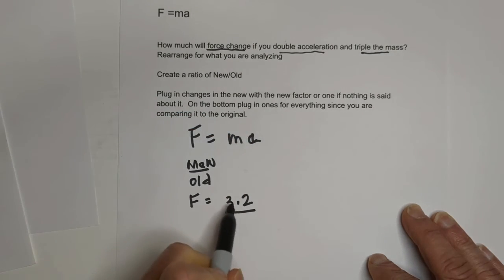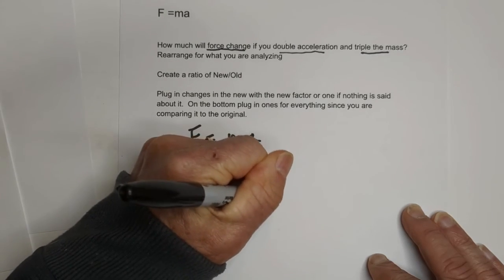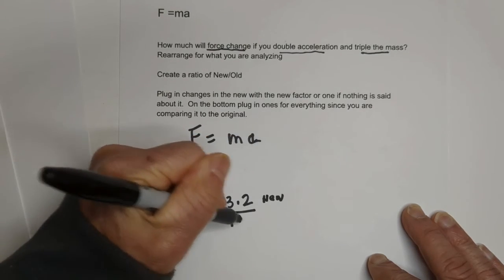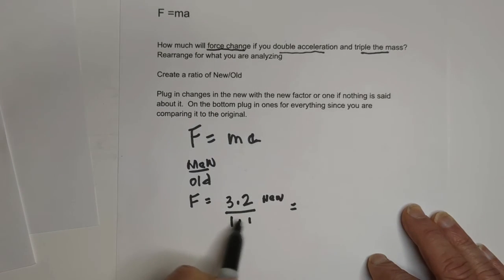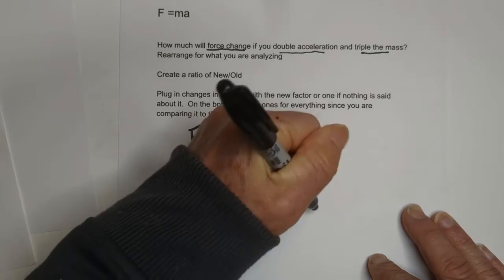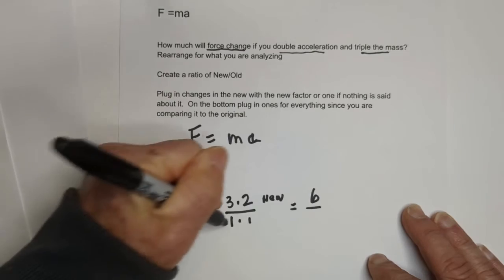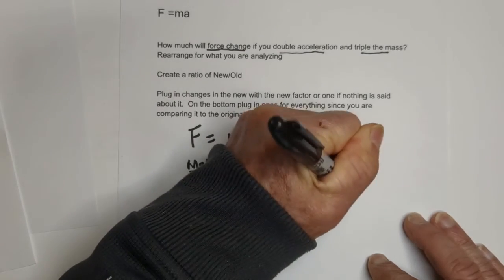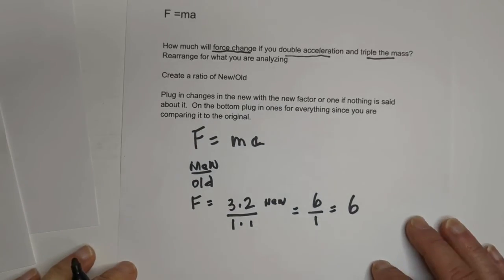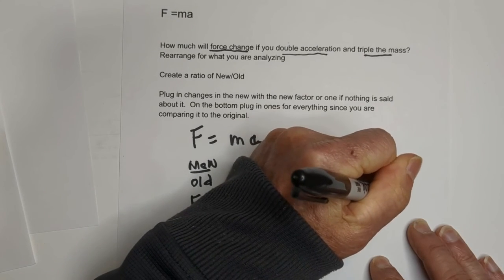Then we're going to place the new over the old, which is one times one, because that's what we're comparing it to. Three times two is six, one times one is one, so it's going to be six times the original force.